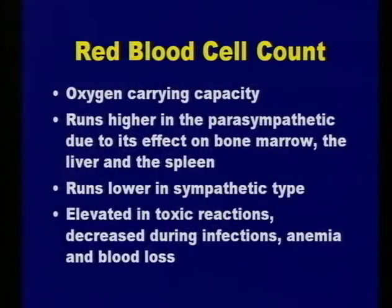There are other parts of the blood test that can tell you organ weaknesses—your top 10 organs and glands that are out of balance—giving you more nutritional profile. The biochemical blood class is also offered by Tree of Light. With the red blood cell count, they are also decreased during infections, anemia, and blood loss. If they're decreased in a sympathetic state, it's saying something's going on and the body is trying to rebuild or fight off—so it's something to look at.